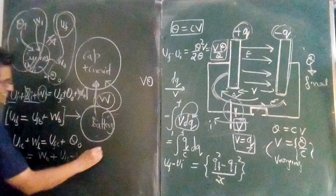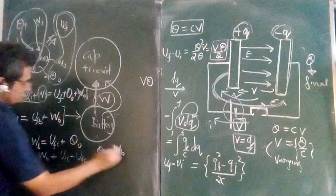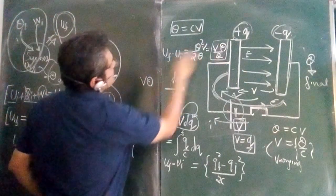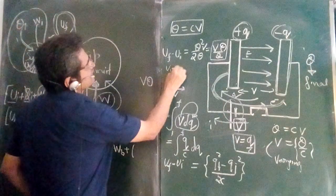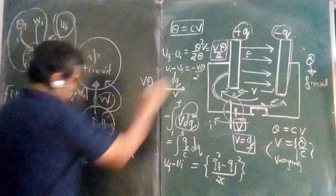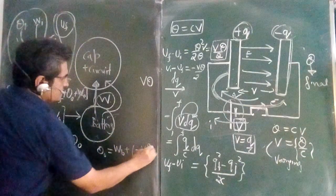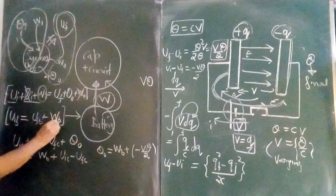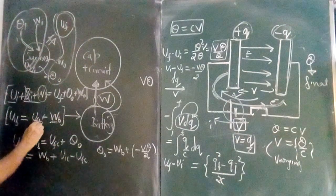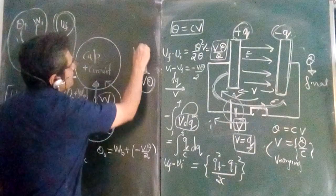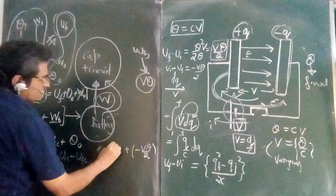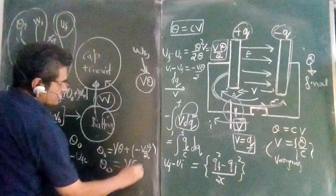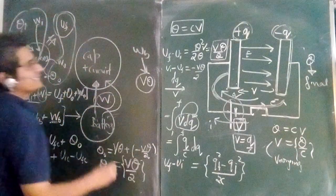Rearranging, Q out equals WB plus U initial capacitor minus U final capacitor. Now U initial minus U final is negative VQ upon 2. And WB, found from the battery equation, is VQ. Substituting: Q out equals VQ minus VQ upon 2, which gives Q out equals VQ upon 2.